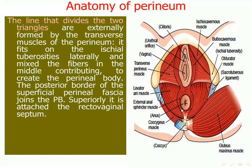The lines that divide the two triangles are formed by the transverse muscles of the perineum, arising from the ischiorectal fossa laterally and mixing their fibers in the midline to create the perineal body. Extending from the ischiorectal fossa to the perineal body, the posterior border of the superficial perineal fascia joins the perineal body. Superiorly, it is attached to the rectovaginal septum.